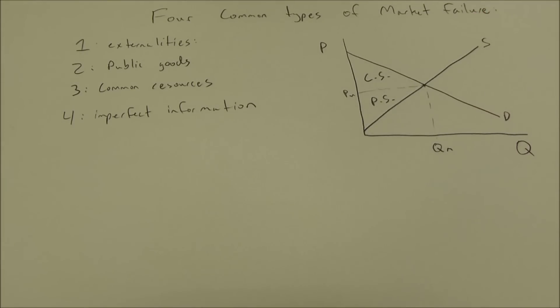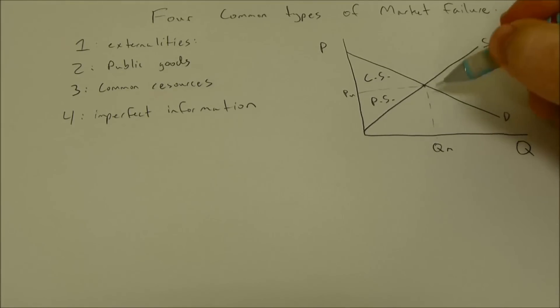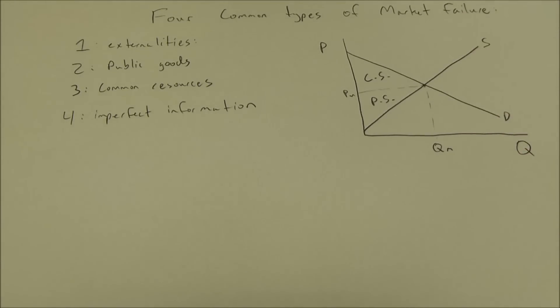So total surplus is maximized, the economy is happy. If we make any change it's going to make the total economy worse off or lower total surplus. This is the idea behind Adam Smith's invisible hand. We let the market determine allocations, everybody's as well off as they can possibly be.